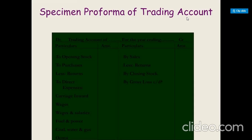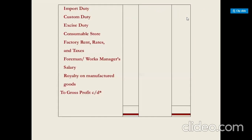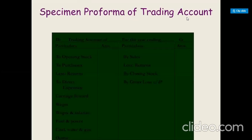Then come direct expenses — such as carriage inwards, wages, wages and salary, fuel and power, coal, water and gas, octroi, import duty, custom duty, excise duty, consumable stores, factory rent rates and taxes, workers or foreman's salary, and royalty on manufactured goods. These are all direct expenses directly connected with the trading concerns.